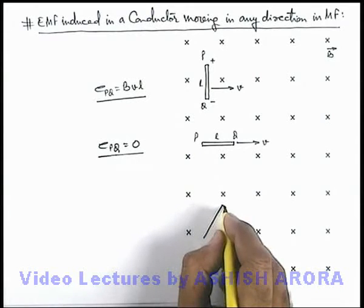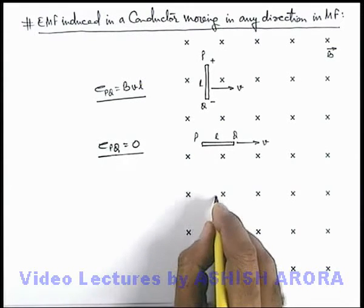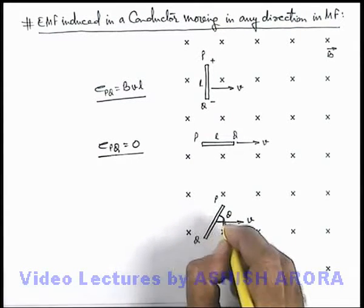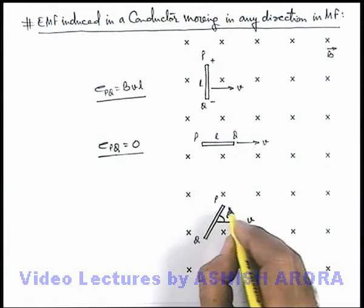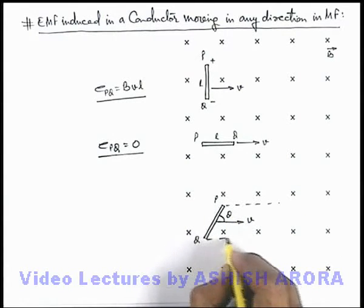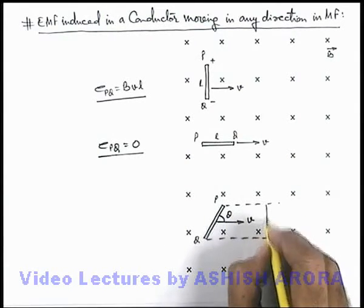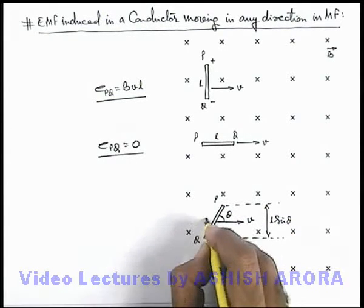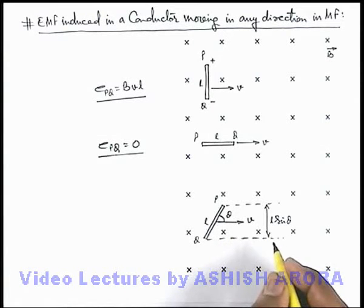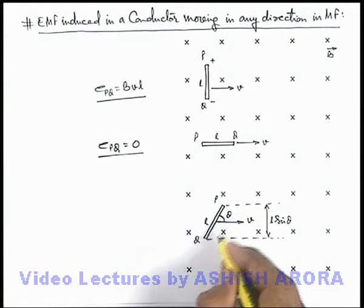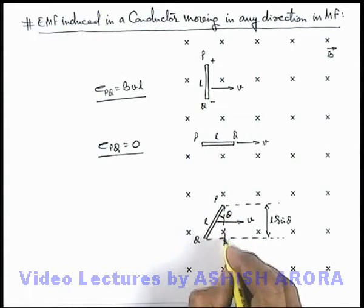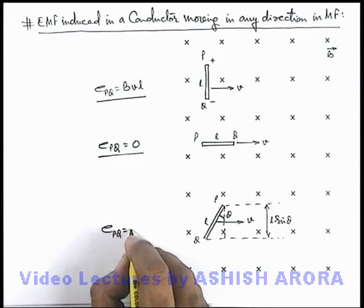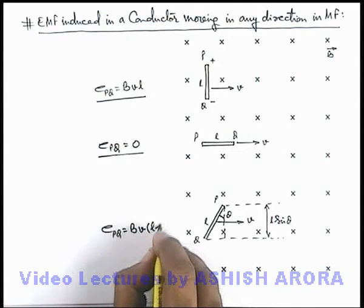In another situation, if a conductor is oriented at some angle and moving with a velocity v at angle theta with its length, then due to the motion of the conductor it will cut magnetic flux in a region of width l sinθ, where l is the length of the conductor. The induced EMF is due to the flux cut by an equivalent rod of length l sinθ. So the induced EMF across PQ can be written as BVL sinθ.